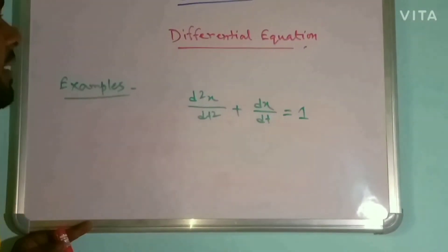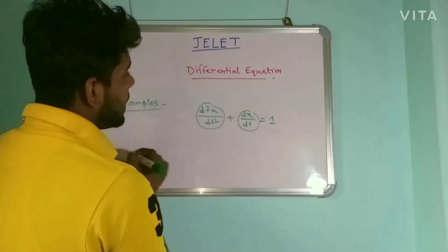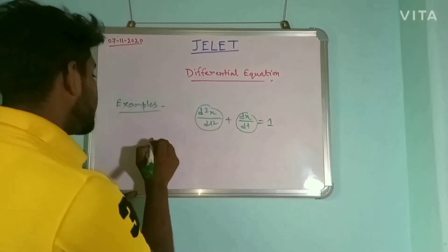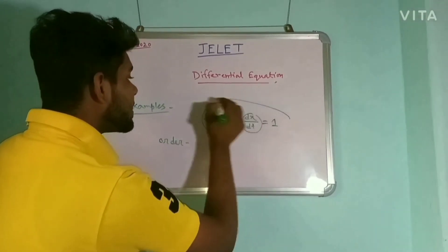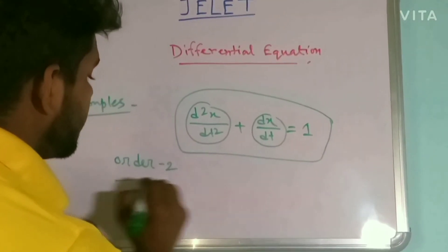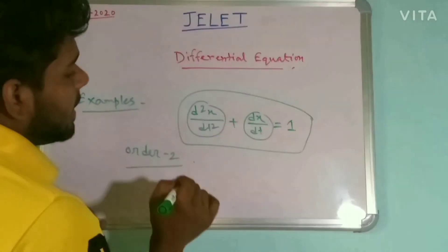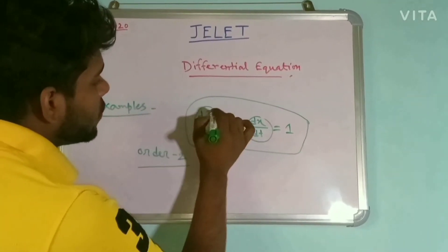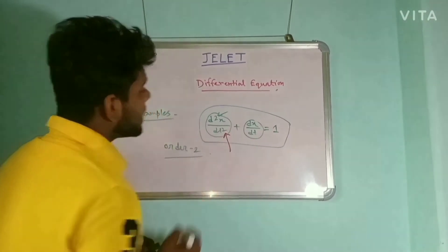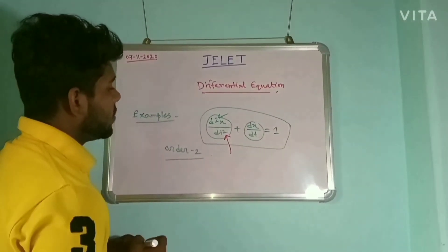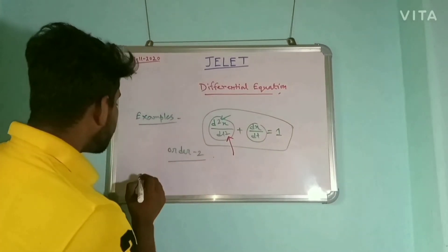Here, this is the first order derivative and this is the second order derivative. The order of the whole differential equation is 2, because the highest number of times the equation has been differentiated is 2. So the order should be 2.